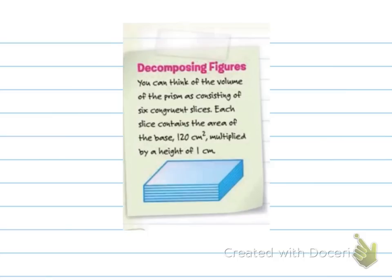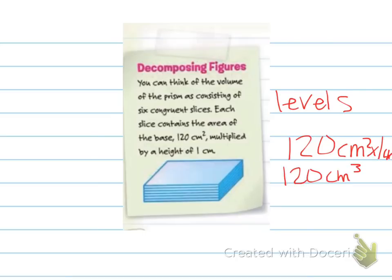So decomposing figures, you can think of the volume of the prism as consisting of six congruent slices, or like I was saying levels. And that each level contains the area of the base, which is 120 centimeters squared. But we're going to multiply it by the height of one centimeter. So we'd have the base times one centimeter and we would end up with 120 centimeters cubed now. And so if we had each of those levels, we'd just have to multiply how many levels we have times this 120 to be able to get to that point, which I think this is going back and reflecting the one where it was six high. And so that was 720 centimeters cubed. So one level was 120 centimeters cubed. Six levels added all together was 720 centimeters cubed.